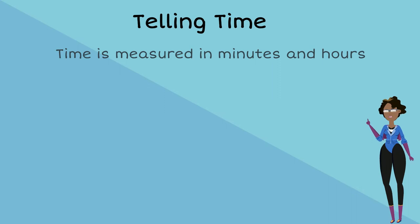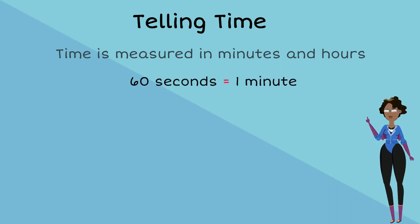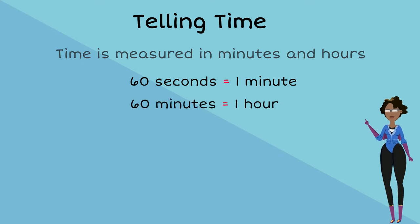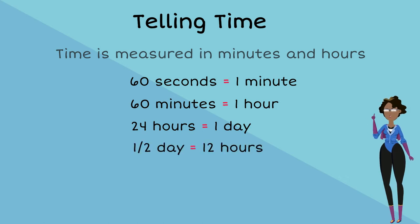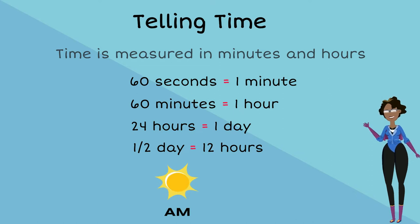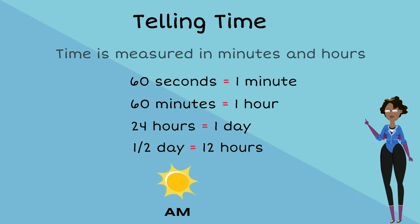Time is measured in minutes and hours. There are 60 seconds in a minute, 16 minutes in an hour, and 24 hours in a day. Half a day, or 12 of those 24 hours, make up the morning period, and the other half, 12 hours, make up the afternoon and evening.